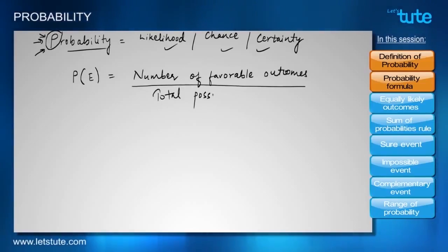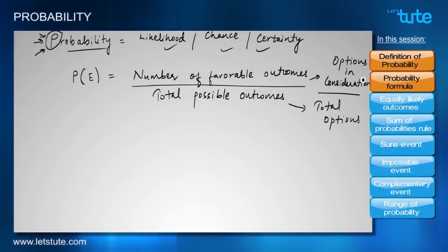It's a ratio between the number of favorable outcomes to the total possible outcomes involved in an event. Total possible outcomes are the total options available to us, and the number of favorable outcomes are, out of these options, whatever we are going to consider. So options in consideration will form the favorable outcomes. The ratio of the options in consideration from the total options will give us the probability of an event.